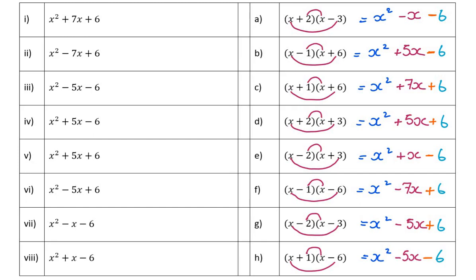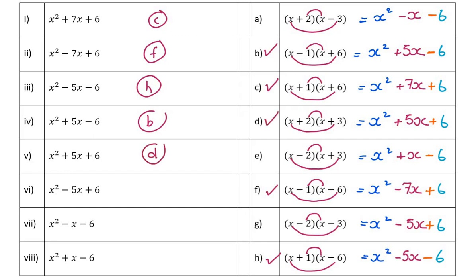Now we've quickly multiplied out those products, noticing a couple of things so that when we try and move backwards we can make our lives easier. Let's quickly match the columns: x squared plus 7x plus 6 is C; x squared minus 7x plus 6 is F; x squared minus 5x minus 6 is H; x squared plus 5x minus 6 is B; x squared plus 5x plus 6 is D; x squared minus 5x plus 6 is G; x squared minus x minus 6 is A; and the last one is E.